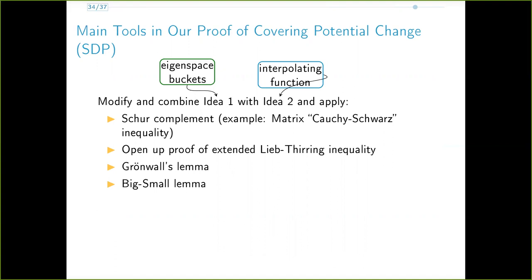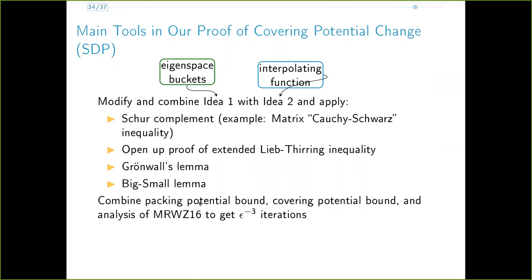So at a very high level, what we do to prove the covering potential lemma in the SDP setting is to modify and combine the first idea of eigenspace buckets with the second idea of an interpolating function, and apply tools like Schur complement, matrix Cauchy-Schwarz inequality, Lieb-Turing's inequality, Grunwald's lemma, and what we call the big-small lemma. We can then combine the packing potential bound that we showed earlier, and this covering potential bound, and repeat the analysis of MRWZ16 to get epsilon to the minus three iterations. This concludes the proof of the iteration count for our algorithm, the proof sketch.